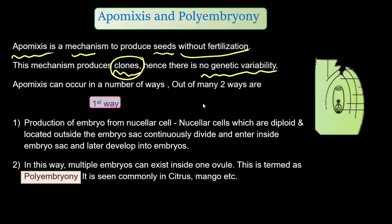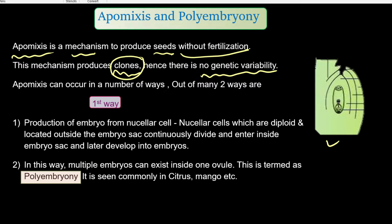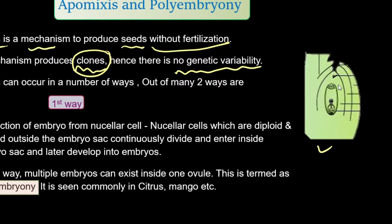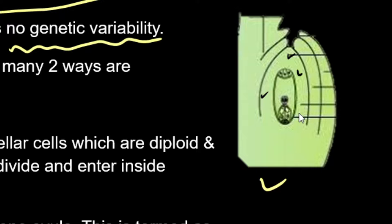Apomixis can occur in various ways; we are going to discuss two forms in this video. In the first form, looking at this diagram, this portion of the ovule is called the nucellus — the part that surrounds the embryo sac.